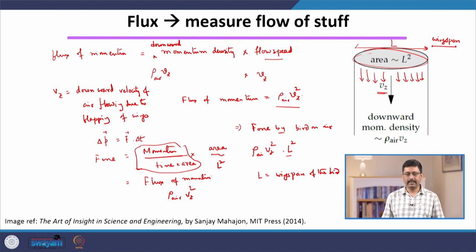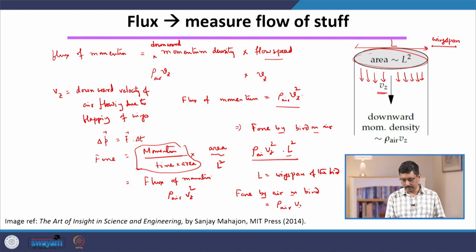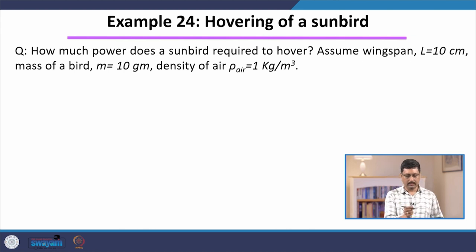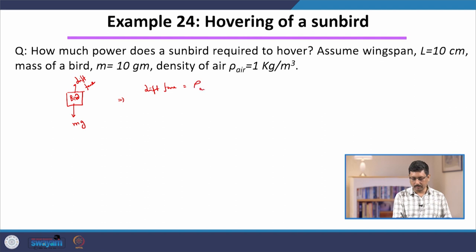We can now write an expression for the force by the bird on air. By Newton's third law, the force by air on the bird has the same magnitude but acts in the upward direction. Then, drawing the free body diagram of the stationary hovering bird: weight acts downward, and the lift force by the air acts upward. So ρ_air × vz² × L² = mg.